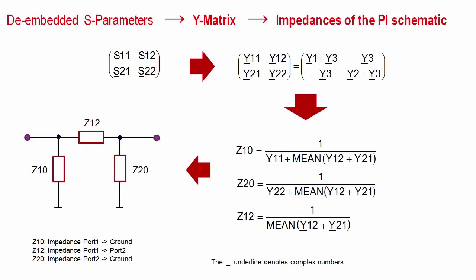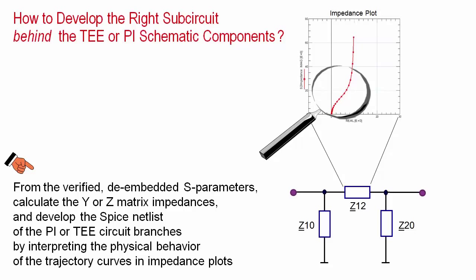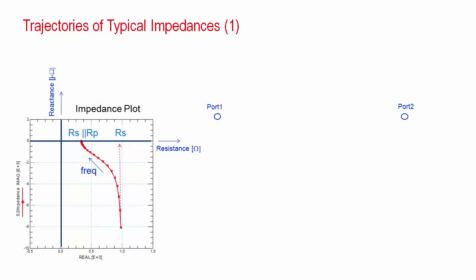As shown by the equations here, the S-parameters are converted to Y and then further to the Pi-impedances. These impedances are then displayed in real imaginary plots and SPICE models will be developed for each branch. But before doing this for our capacitor data, I want to show a few basic examples of this modeling method. As mentioned, we are applying real imaginary plots with the resistance at the X-axis and the imaginary, the reactance, at the Y-axis.